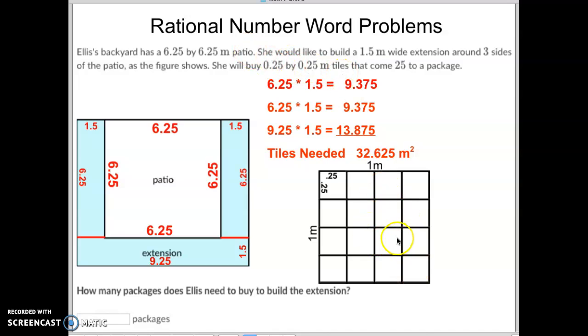There's 25 of these little tiles per package. So we know that 0.25 times 0.25, if we put that in a calculator, would equal 0.0625 of a meter. And we know that it takes 25 of those square meters—by the way, 0.0625 is the area of this little portion right there. Well, we need 25 of those tiles to make up one package, and that comes out to a total of 1.5625, so just over one and a half of these.